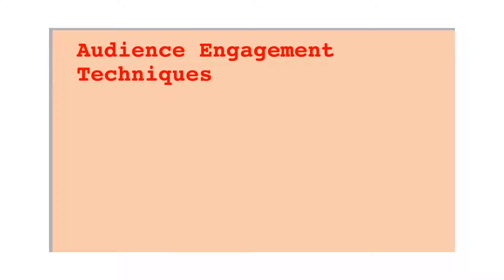Another technique is audience recitation. You may have noticed this in sample speeches — like when the speaker said 'Do you validate?' and everyone responded 'cha-ching.' Basically, you have the audience recite a phrase throughout the speech. You have to first plant the phrase — say it yourself one or two times — before you start cueing the audience to fill in the blank. Keep the phrase easily sayable, maybe three or four words long at most, and then give them an opportunity to recite it.